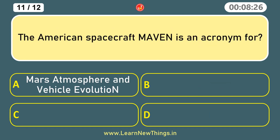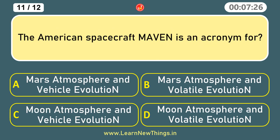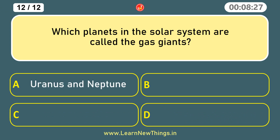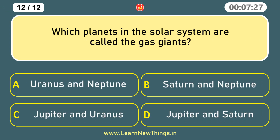The American spacecraft MAVEN is an acronym for? Mars Atmosphere and Volatile Evolution. Which planets in the solar system are called the gas giants?